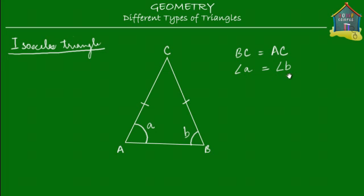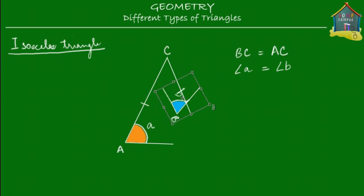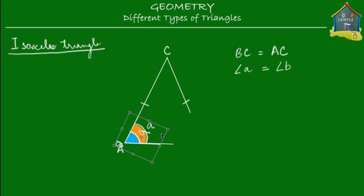So angle A is equal to angle B, and I can show you that. Let's drop some color into these, and we're going to see that the blue angle is equal to the orange angle. We cut this, paste it here, and then rotate it — and you'll see that it fits completely into the orange angle. The blue angle, which is angle B, blends completely with the orange angle, which is angle A. So the interesting thing about isosceles triangles is that it's not just the sides that are equal, but the angles opposite to those equal sides are also equal.